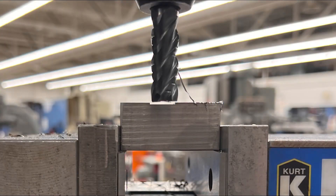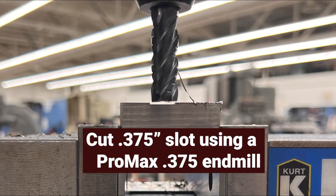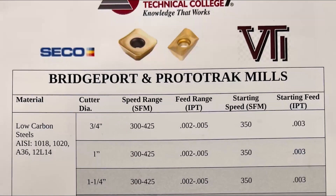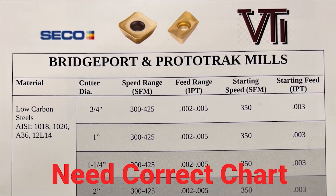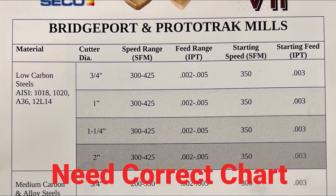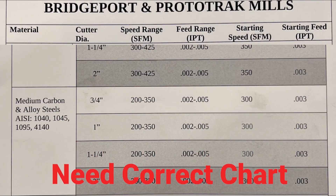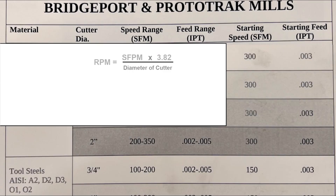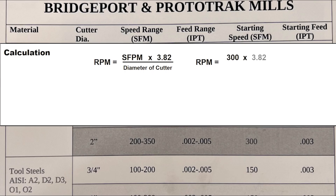For our next example, we will cut a .375 slot in the same piece of material using a Promax .375 carbide end mill. The chart lists a SFPM of 300 to 350 with 300 as the starting point. 300 times 3.82 divided by .375 diameter of cutter equals 3056 RPM.